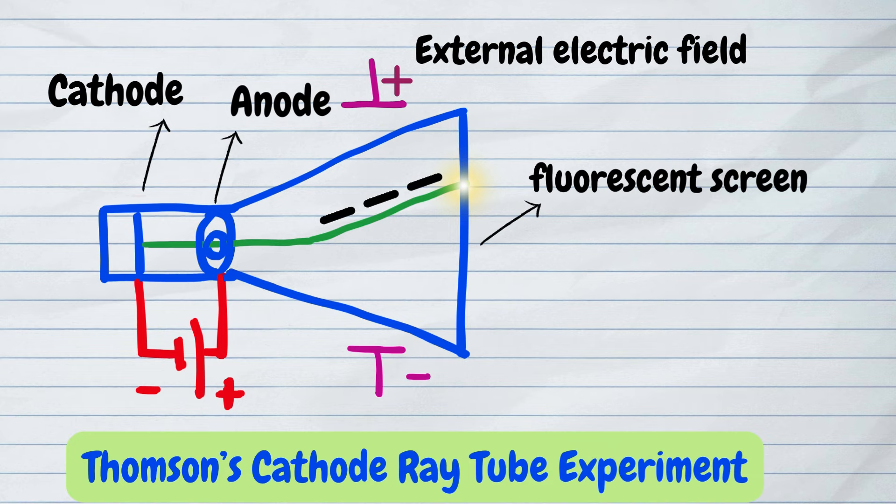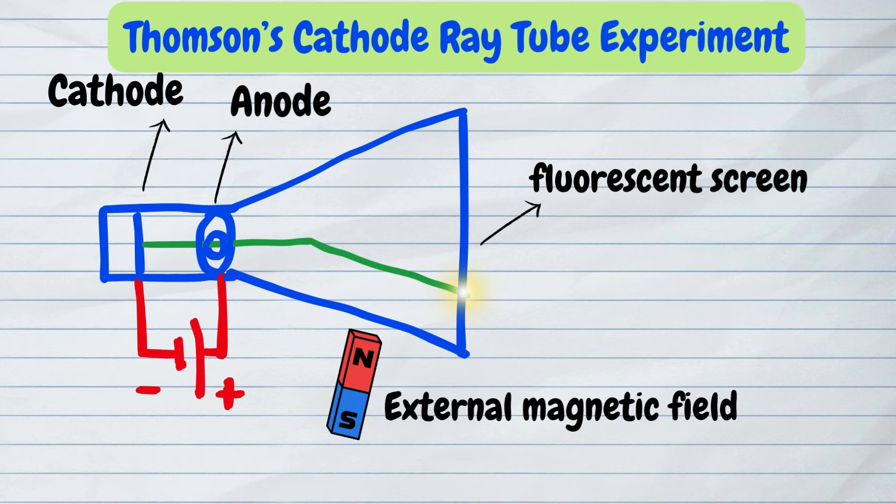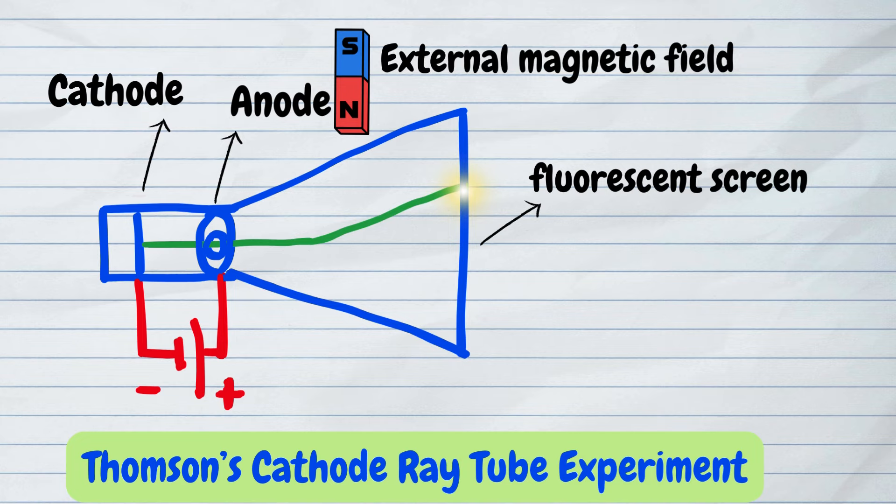This ray also deflected when an external magnetic field was applied across the tube, indicating that these rays were composed of charged particles.